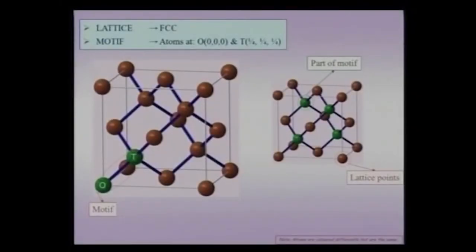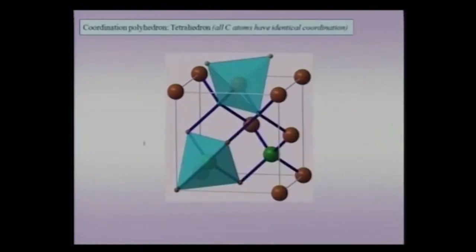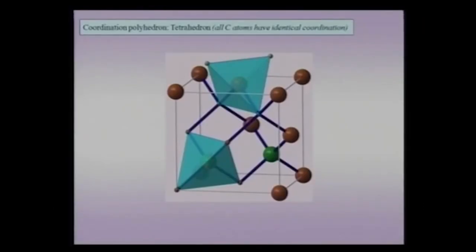The lattice is FCC and two atoms form the motif — the O and T atoms at (0,0,0) and (¼,¼,¼). The motif consists of two identical atoms. I could alternately choose my origin at T instead of O and find the structure remains unaltered. Either the O atoms form a lattice with T as the motif, or vice versa. Every atom, irrespective of where it sits — on a face, corner, or (¼,¼,¼) — has identical tetrahedral coordination.